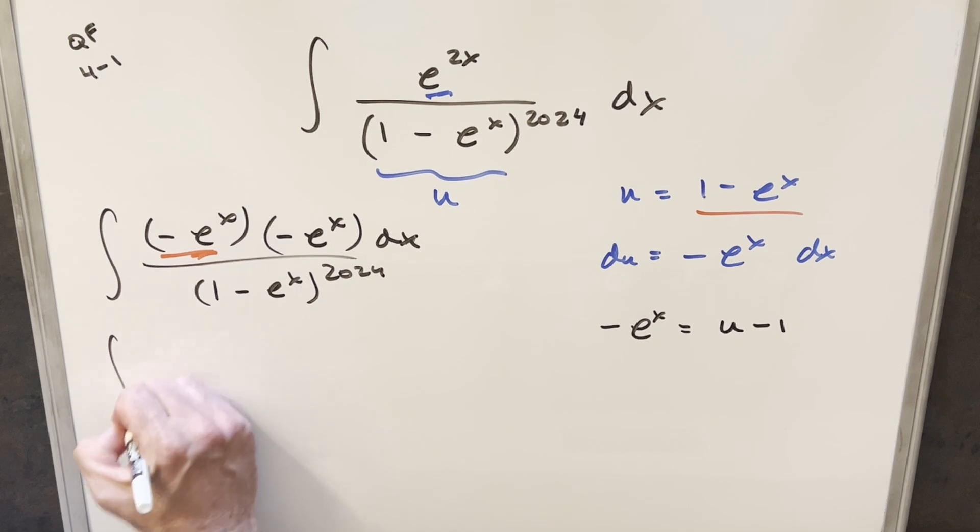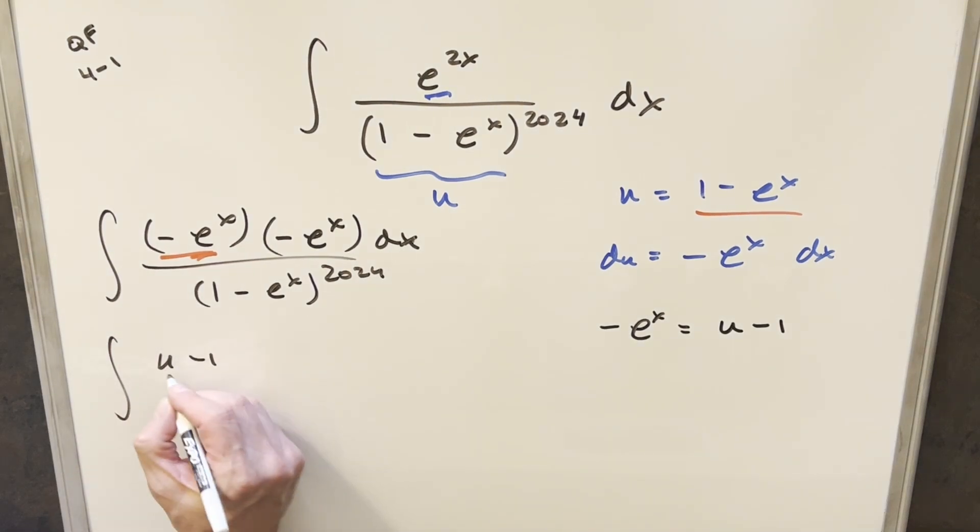So now I'll just go ahead and substitute. So again, for this here, this is going to become u minus 1. All this here is going to be du, and the denominator is actually just going to become u to the 2024.